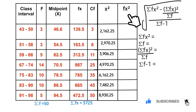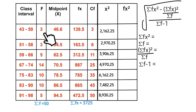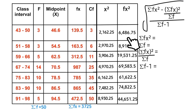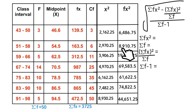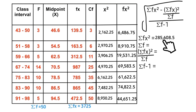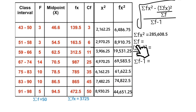We'll proceed to the fx² column. fx² simply means frequency multiplied by x². For the first row we have 3 × 2162.25; next, 3 × 2970.25; then 5 × 3906.25. We apply the same rule to fill the rest. Summing all together: 6486.75 + 8910.75 + 9531.25 + 69583.5 + 61622.5 + 74822.5 + 44651.5 = 285608.5. The summation f value is 50.